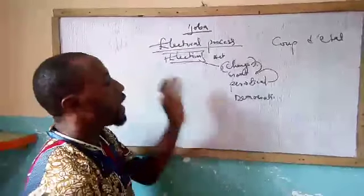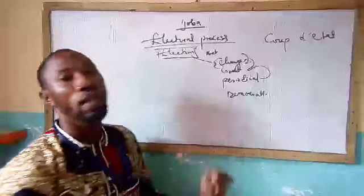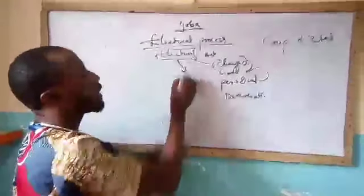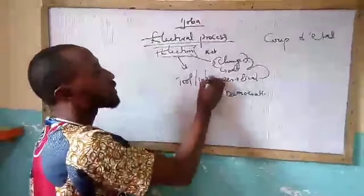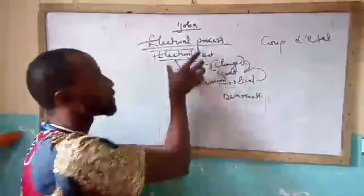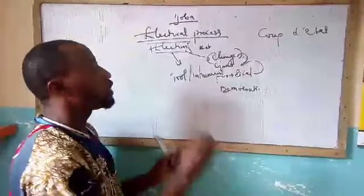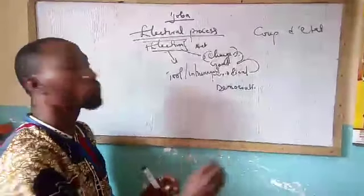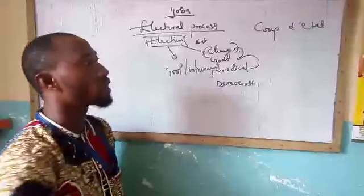Any democratic society without election is just like a car without an engine. We can also say election is a tool or an instrument that is used to correct the errors of the previous administration. Election is an apparatus that we use to correct errors made by the previous administration. That is the concept of election.